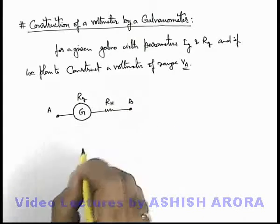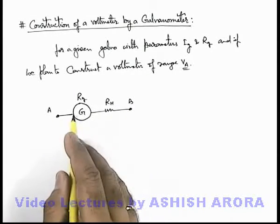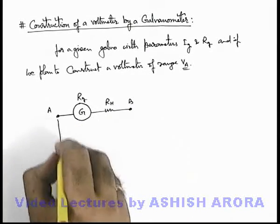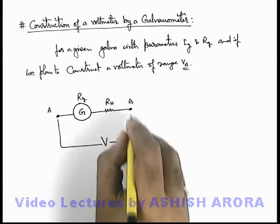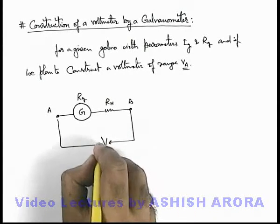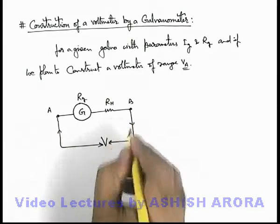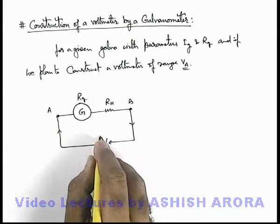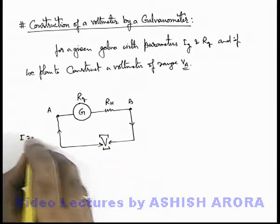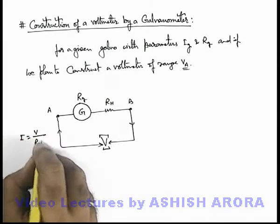Say in this galvanometer, across terminals A and B we apply a potential difference V. Now in this situation if we apply a potential difference V, a current flows through the galvanometer due to this potential difference V, and the value of current we can write as V by R_g plus R_h.